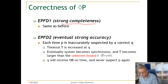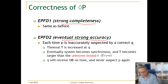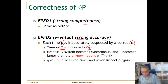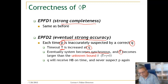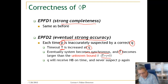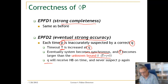Now let's look at eventual strong accuracy. Each time a process P is inaccurately suspected by another correct process Q, Q will increase its timeout T. Eventually the system becomes synchronous, and eventually T becomes larger than a known bound of this partially synchronous system. After that, when T becomes large enough, Q will always receive heartbeats from correct processes on time and never suspect P again.